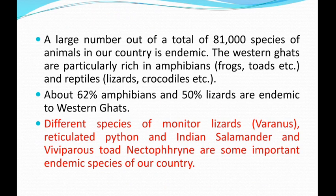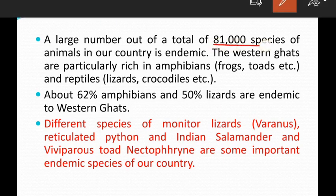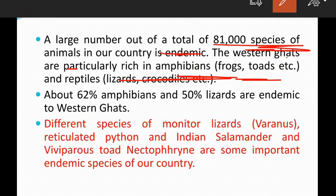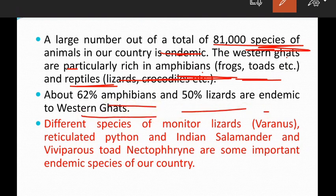A large number out of the total 81,000 species of animals in our country is endemic. The Western Ghats are particularly rich in amphibians. About 62% of amphibians and 50% of lizards are endemic to the Western Ghats. There are around 100 endemic amphibian varieties and 100 lizard varieties of which 50% are endemic species restricted to the Western Ghats.